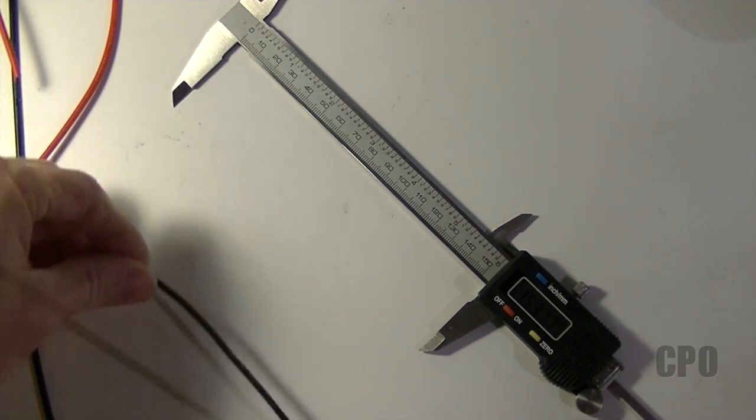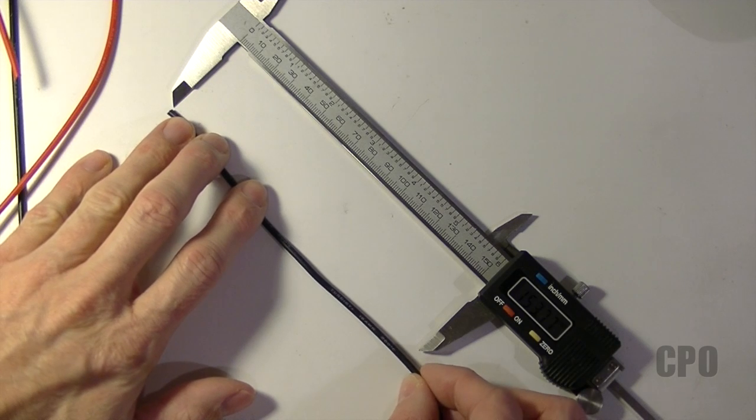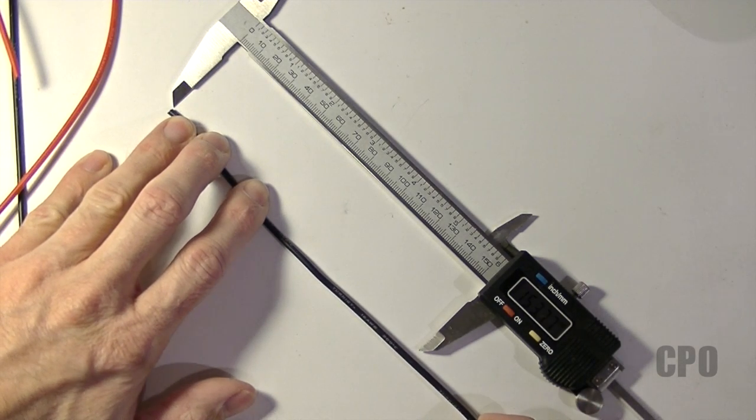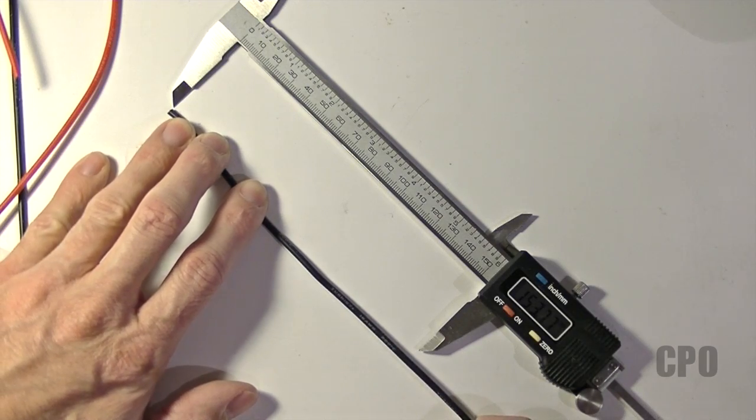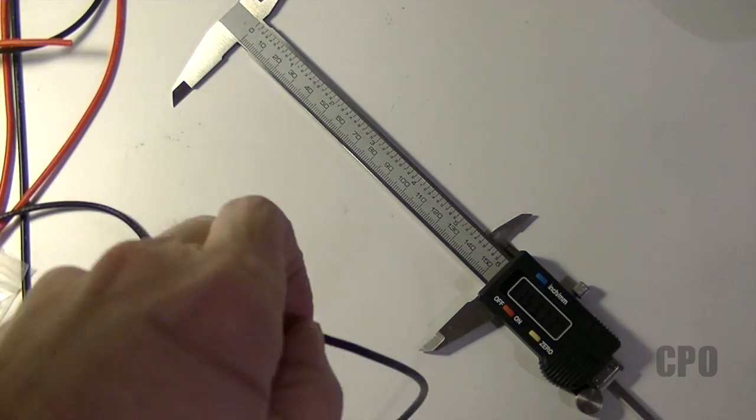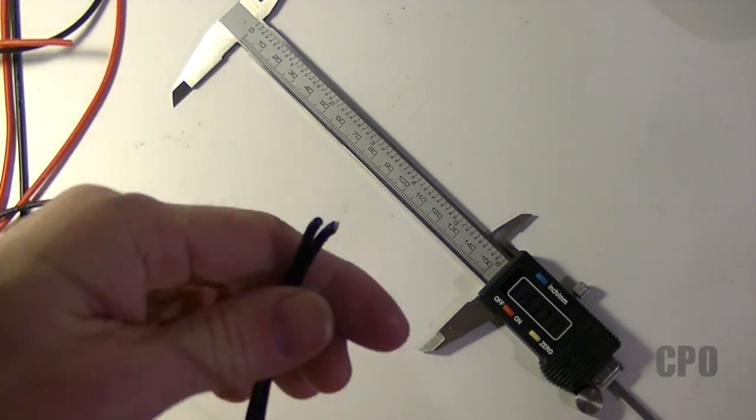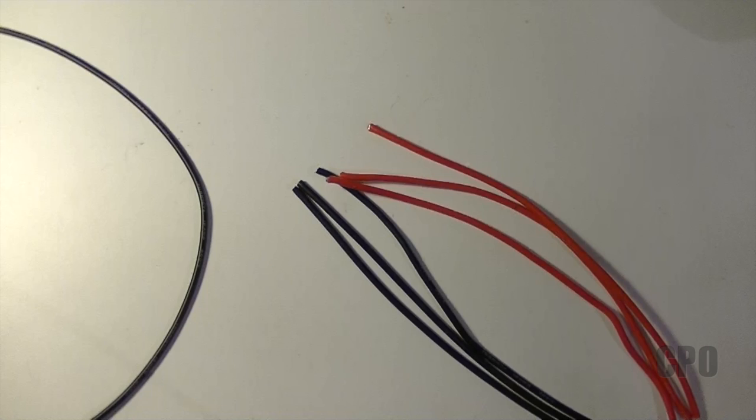In my build the length is pretty arbitrary. I'm just making sure I have enough length to be able to connect everything. I'm looking like about 170, maybe 180 millimeters for all the wires. So I'm just going to go ahead and cut all of my wires to that length. And since this is a tricopter build I'll need three black wires and three red wires.